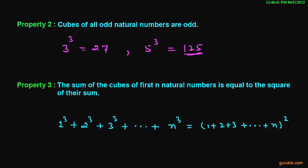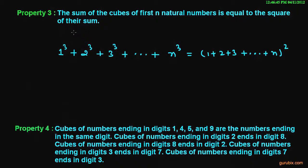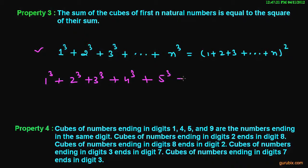So this property is also true. Now let us move to property number 3: the sum of cubes of the first n natural numbers is equal to the square of their sum. Suppose we want to calculate the sum of cubes of the first 5 natural numbers — this means 1³ + 2³ + 3³ + 4³ + 5³. We can calculate this sum using the formula by adding these numbers and calculating the square of the sum.